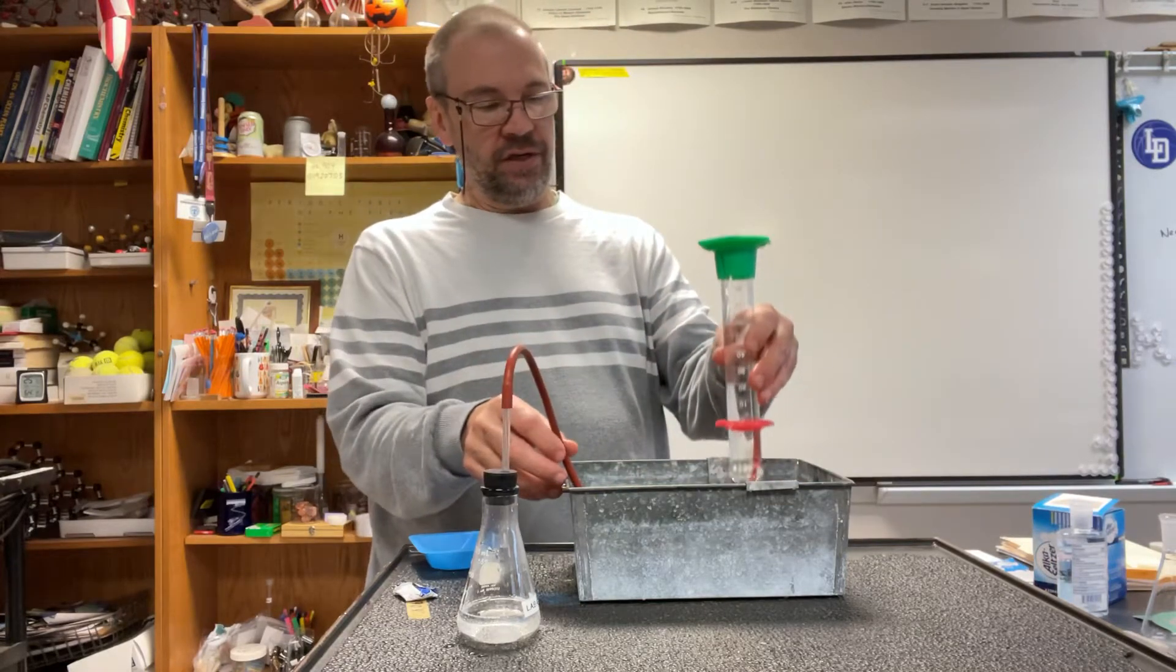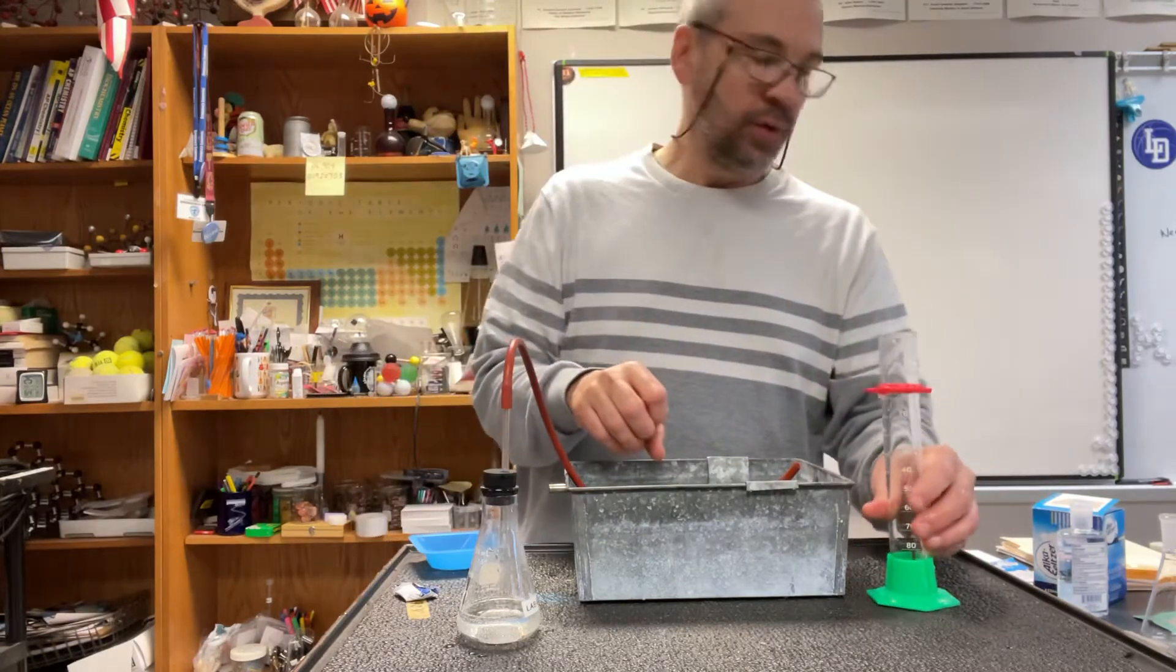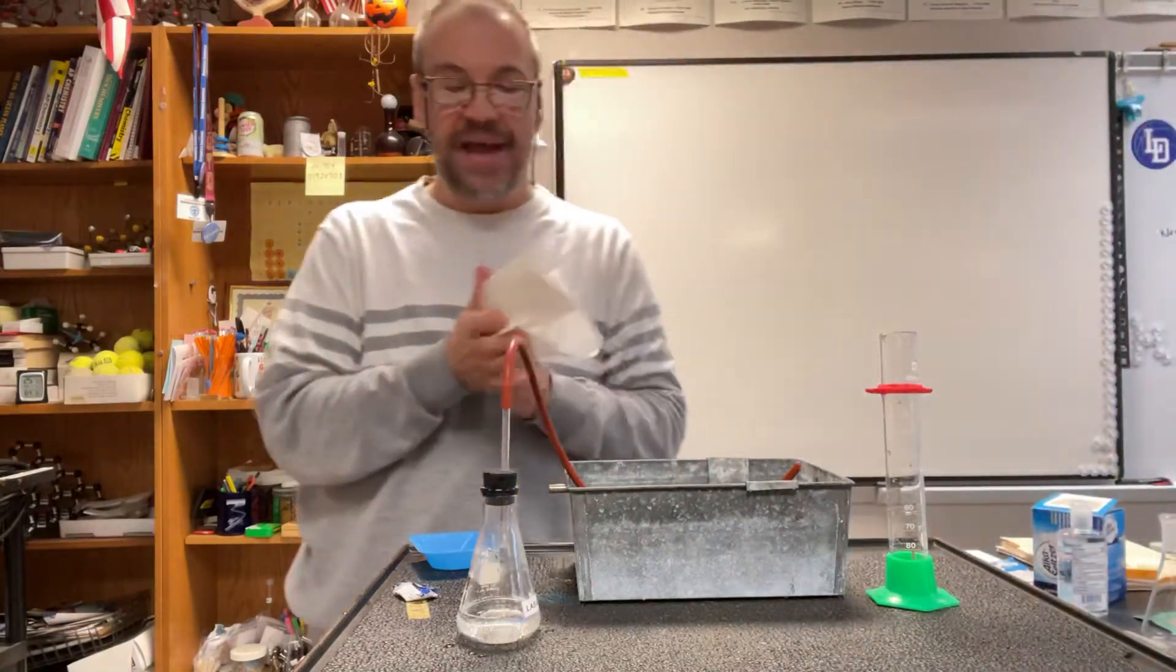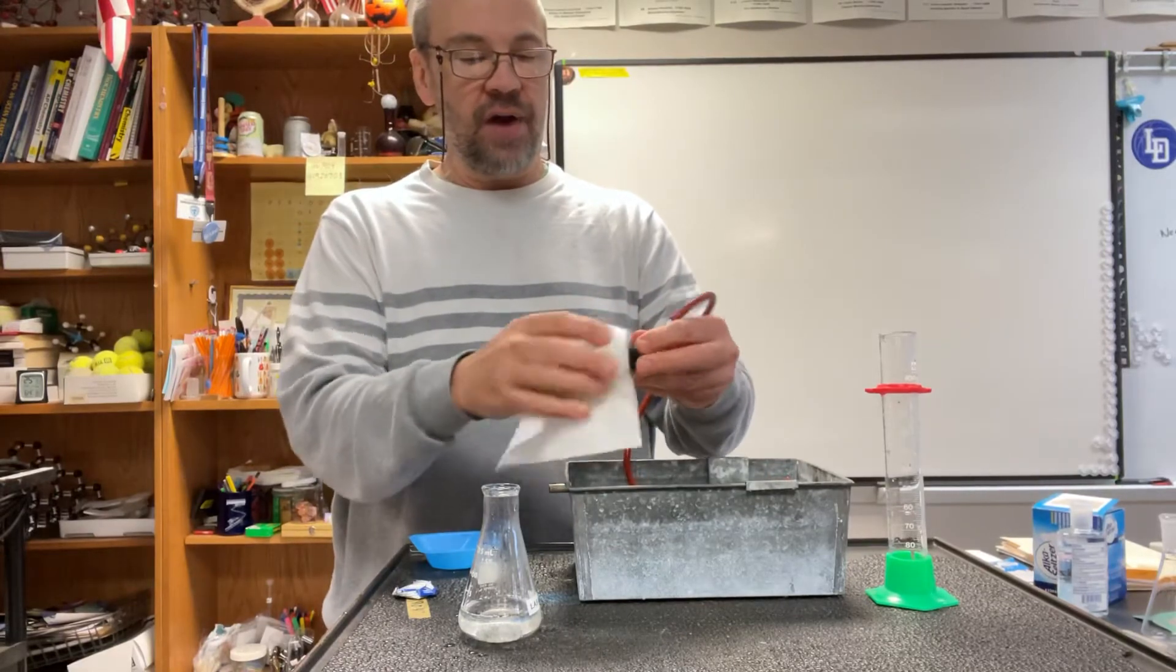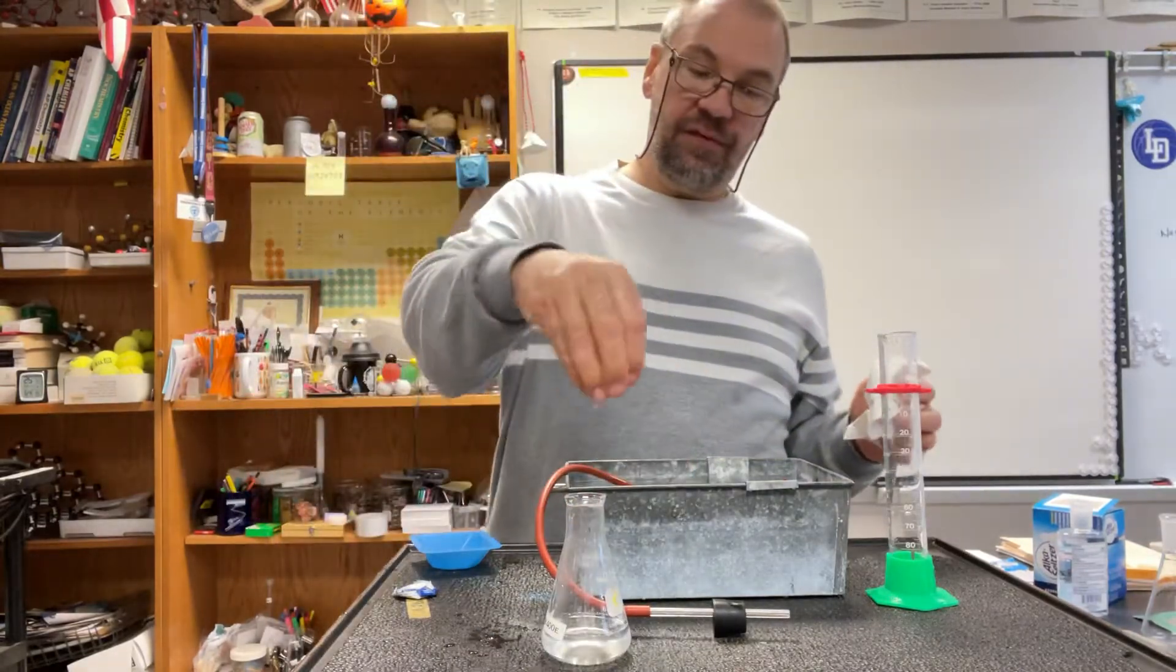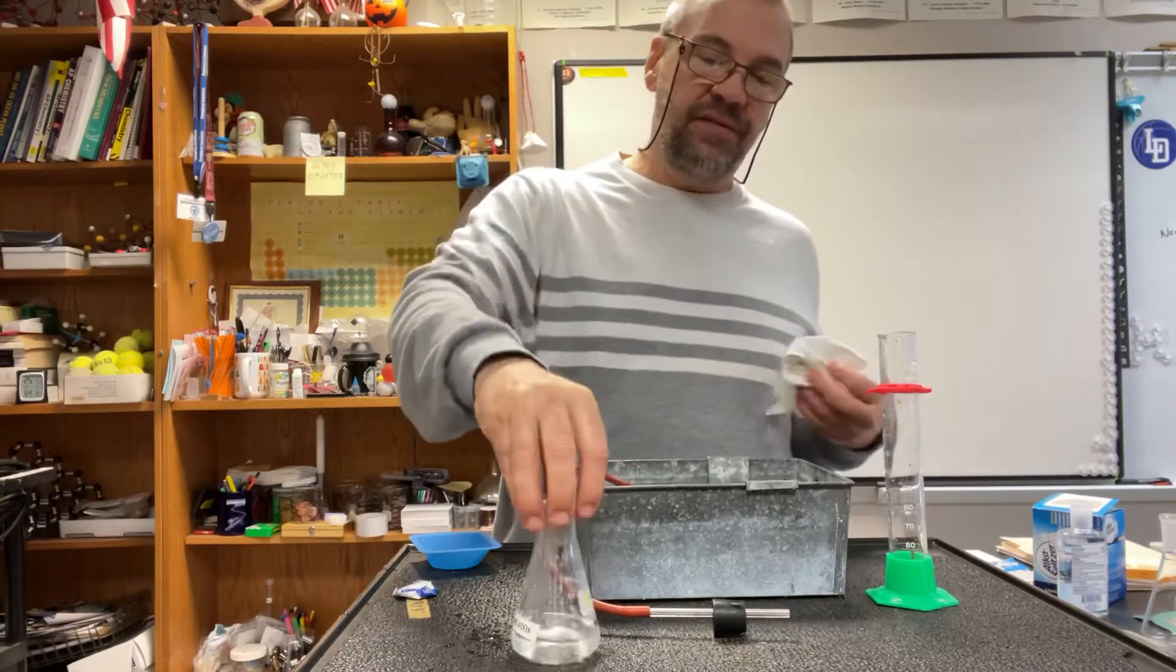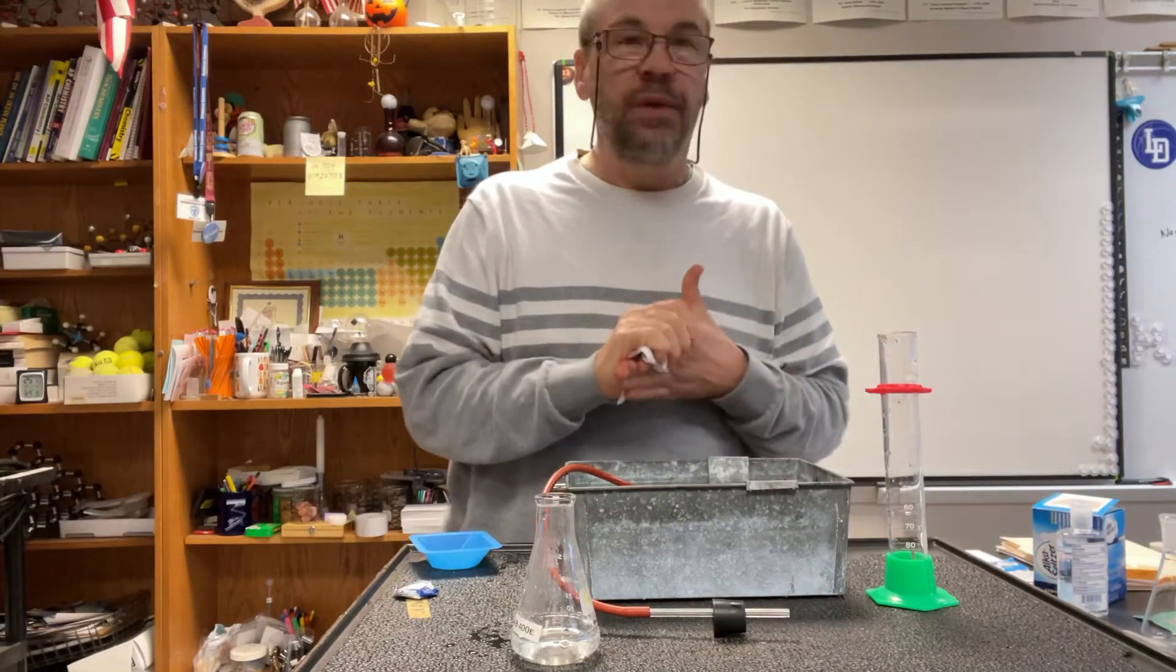When you're done, you can just go like that and the water will drain in, and then you can do another trial. Just make sure when you go to get your masses, everything should be dry. You want to make sure the Erlenmeyer flask is dry, because if you drip water on the flask, now you've changed the mass of that flask. All right, so we'll see how this goes.